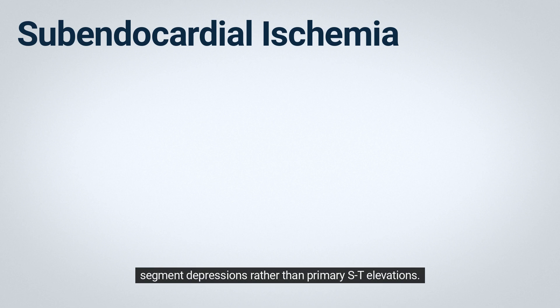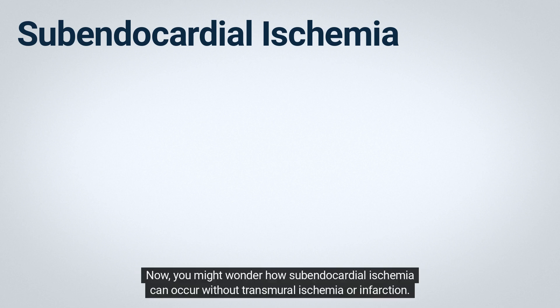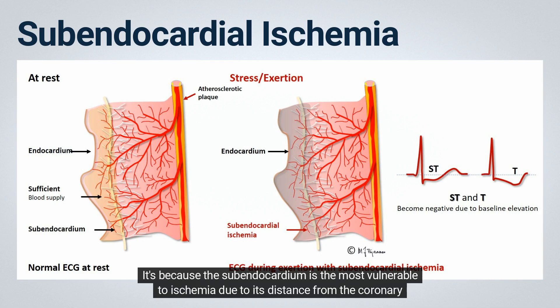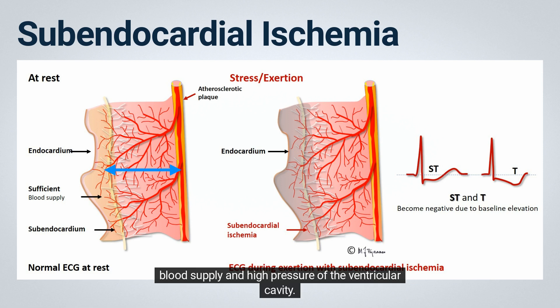You might wonder how subendocardial ischemia can occur without transmural ischemia or infarction. It's because the subendocardium is the most vulnerable to ischemia due to its distance from the coronary blood supply and the high pressure of the ventricular cavity.